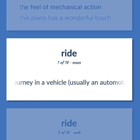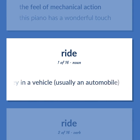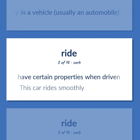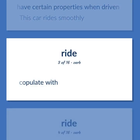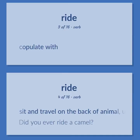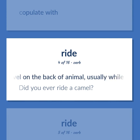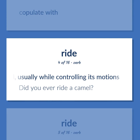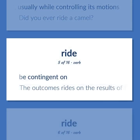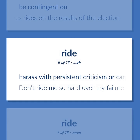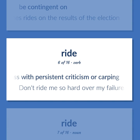Ride: A journey in a vehicle, usually an automobile. Have certain properties when driven — this car rides smoothly. Sit and travel on the back of an animal, usually while controlling its motions — did you ever ride a camel? Be contingent on — the outcome rides on the results of the election. Harass with persistent criticism or carping — don't ride me so hard over my failure.